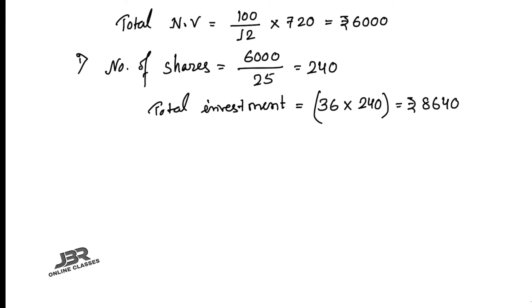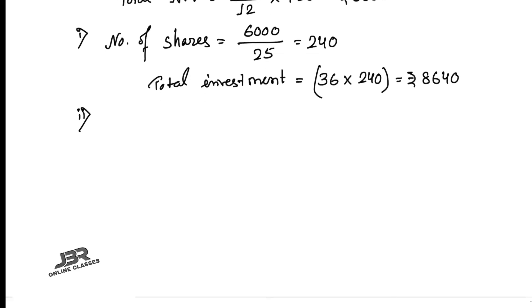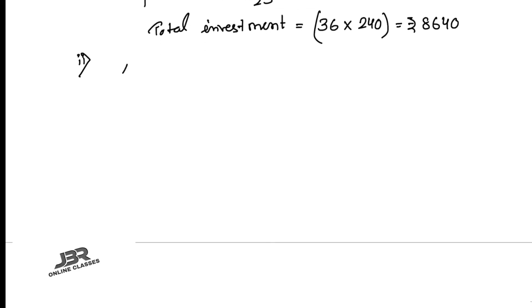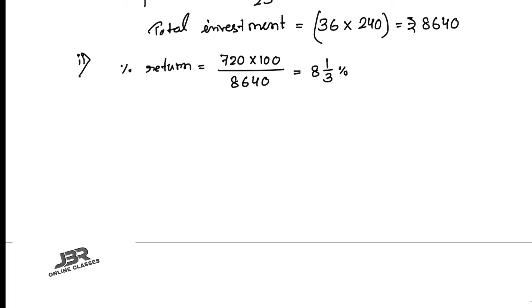For part two, the percentage return on investment = (720 × 100) ÷ 8640 = 8⅓%. Now moving to sum number eight.